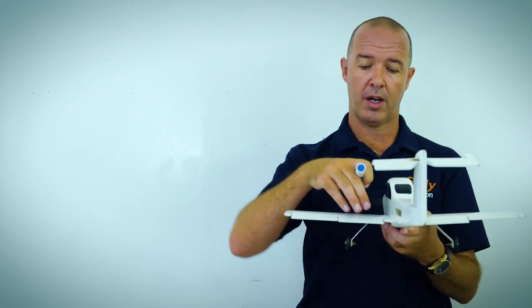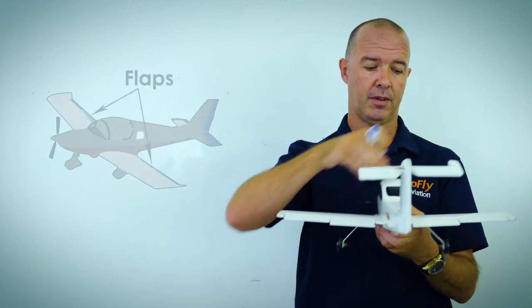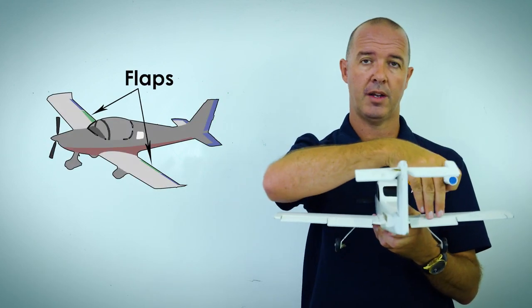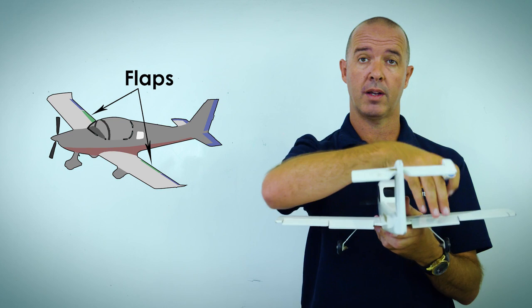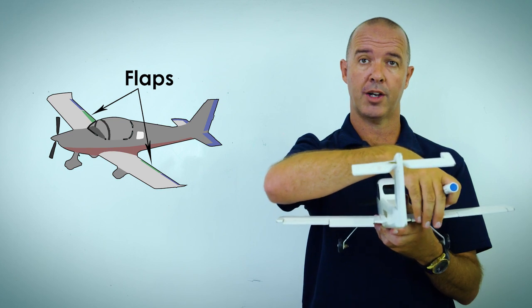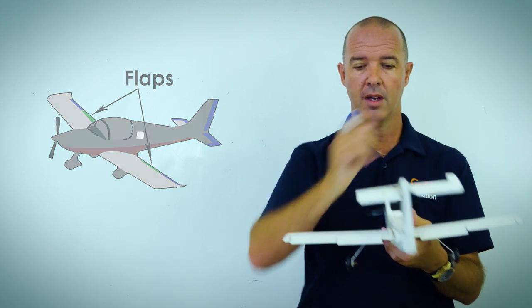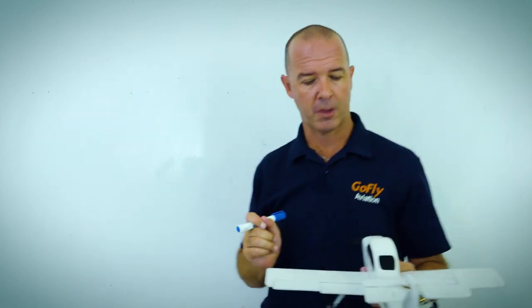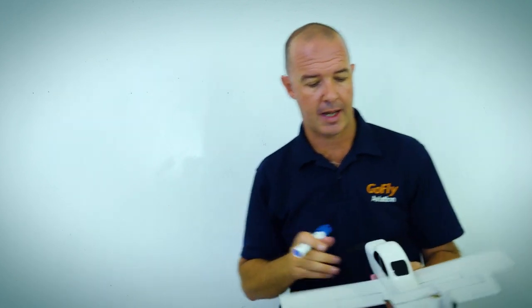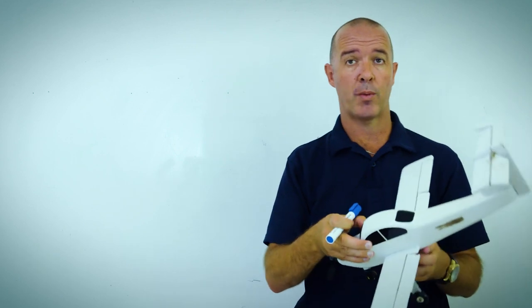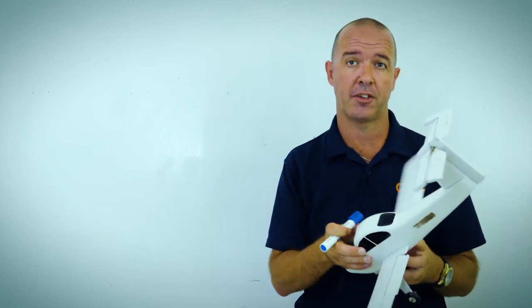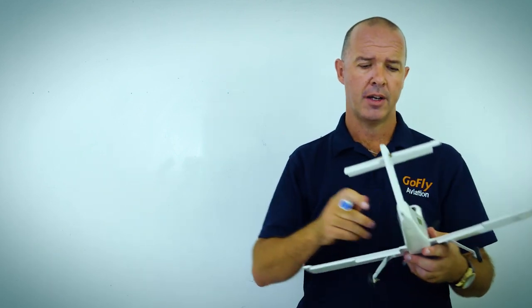We also have our flaps, which are situated on the inward part of the wing. Now we're going to look at the different axes that we have on the aircraft.